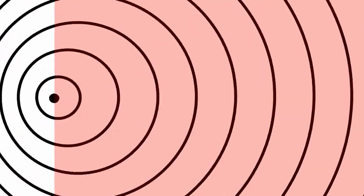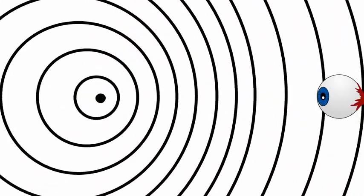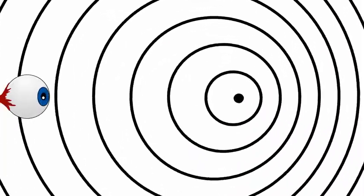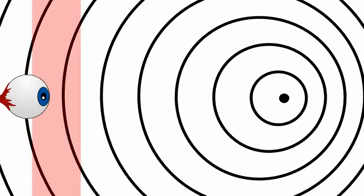In the direction it's moving, the wave fronts bunch up, and behind it they spread out. If our object is moving towards a stationary observer, these bunched up waves are observed at a high frequency, and if the object is moving away from a stationary observer, the waves are observed at a lower frequency.